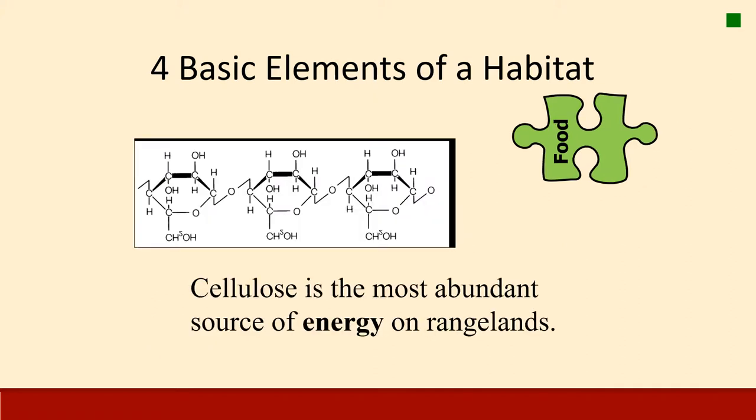We can't think about energy without also thinking about cellulose. Cellulose is the most abundant source of energy on rangelands. It is essentially a carbohydrate that forms the skeleton of most plant structures and plant cells, and it's also a great source of dietary fiber. When we think about how animals process cellulose, we can break them into three categories: concentrate selectors, ruminants, and hindgut fermenters. This affects what type of habitat they use, and when we think about restoring habitat, we need to understand what types of animals will be present so we can meet their food requirements.